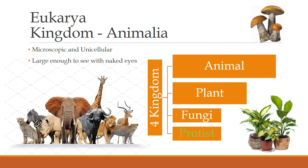Eukarya is a domain of organisms that have eukaryotic cells. The kingdom animalia belongs to the domain eukarya. They are mostly multicellular, but some of them are unicellular and microscopic, and some are large enough to see with the naked eye. There are four kingdoms under the domain eukarya: the animal kingdom, plant kingdom, fungi kingdom, and the protist kingdom.